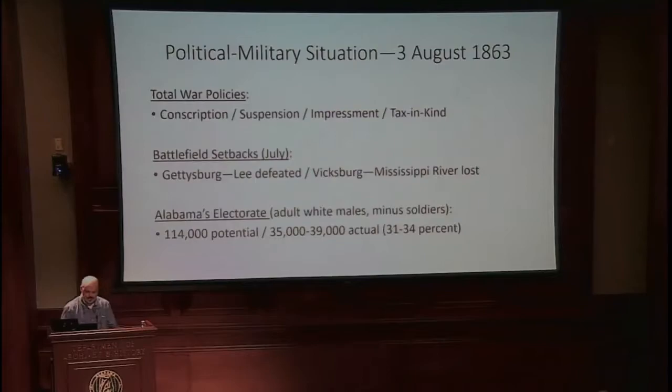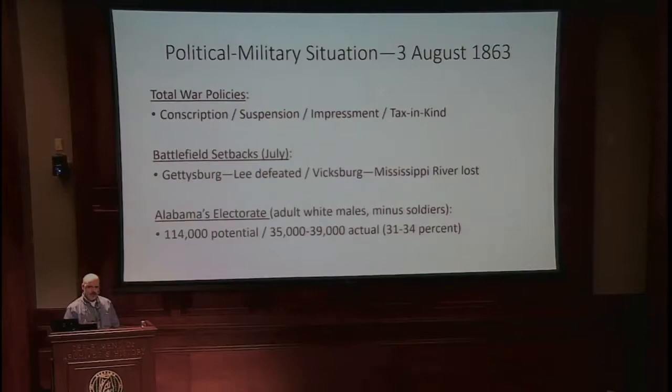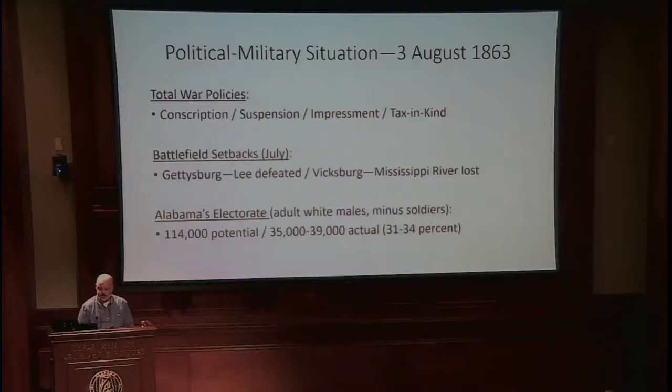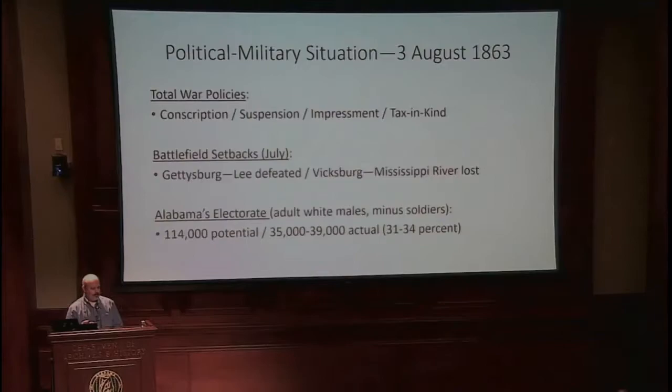Those total war policies are the backdrop going into the election — making great demands and calling on the people to sacrifice — but there are also battlefield setbacks. The military situation has taken a nosedive in the summer of 1863. Robert E. Lee's Army of Northern Virginia was badly defeated at Gettysburg with approximately 25,000 casualties, and at about the same time Vicksburg, the great Confederate citadel on the Mississippi River, fell to Ulysses S. Grant, cutting Confederate contact with the states on the other side.